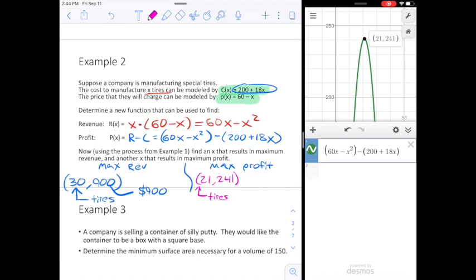Now this means that if I sell 21 tires, I'll make a profit of $241. Don't get confused here: this $900 was $900 of revenue, that meant $900 coming in. This is $241 of profit, that means I actually get to put $241 in my pocket.